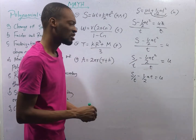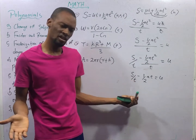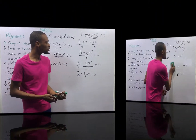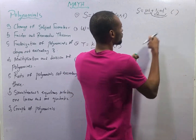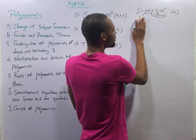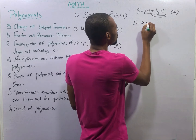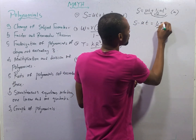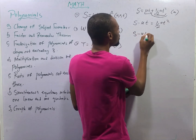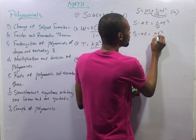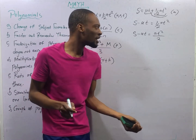So anyhow you simplify it, just make sure you know what you are doing. Ladies and gentlemen, that is your answer. If we are to make A the subject formula, the UT term moves instead and this remains. We have S minus UT equals one-half AT squared. This is the same thing as S minus UT equals AT squared divided by 2.